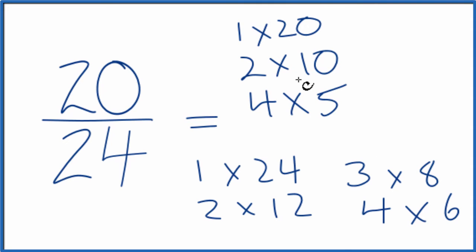We're looking for the greatest common factor, and it looks like the greatest common factor is going to be four. So four goes into 20 and 24.